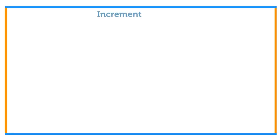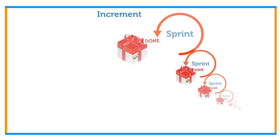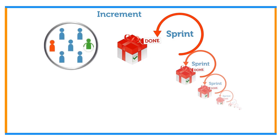Previously we mentioned the word increment — let's find out what it is. The increment is the sum of all the product backlog items completed during a sprint and the value of the increments of all previous sprints. At the end of a sprint, the new increment must be done, which means it must be in usable condition and meet the Scrum team's definition of done.